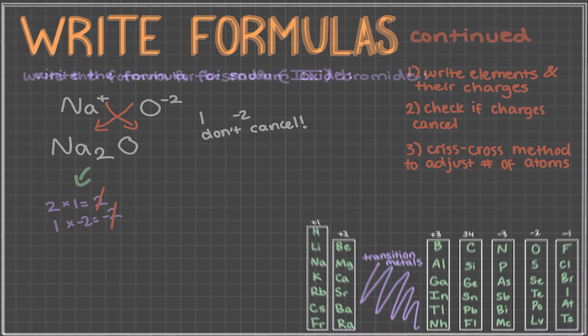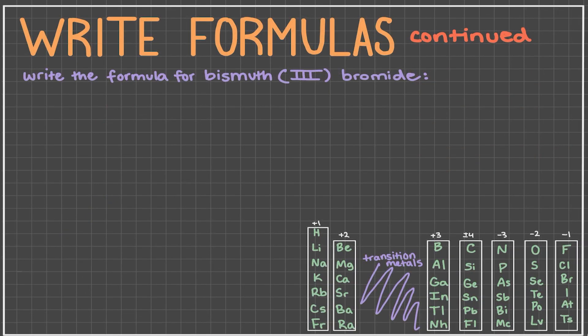Let's try another example together. Write the formula for bismuth bromide. So here we are given that bismuth has a plus 3 charge. So we can write it as Bi plus 3. From our periodic table, we can see that bromine has a 1 minus charge. So we write Br 1 minus. Now do the criss-cross method. So bring the 3 over to bromine and the 1 to bismuth. Therefore, we have BiBr3 as our answer. If we want to verify that this is correct, we multiply the 1 bismuth atom by its charge of 3 to get 3. And the 3 bromine atoms by its charge of negative 1 to get negative 3. 3 and negative 3 cancel out, so we're correct.